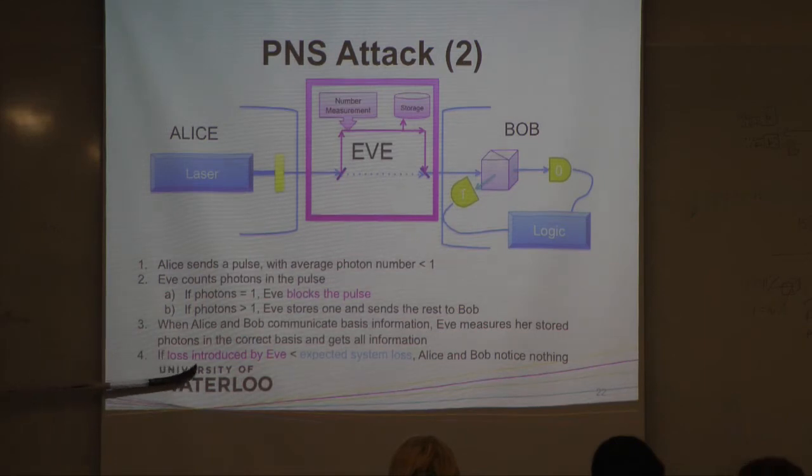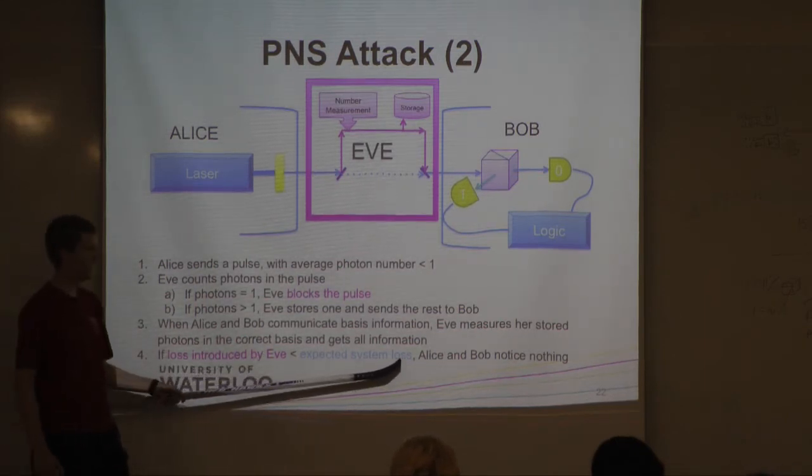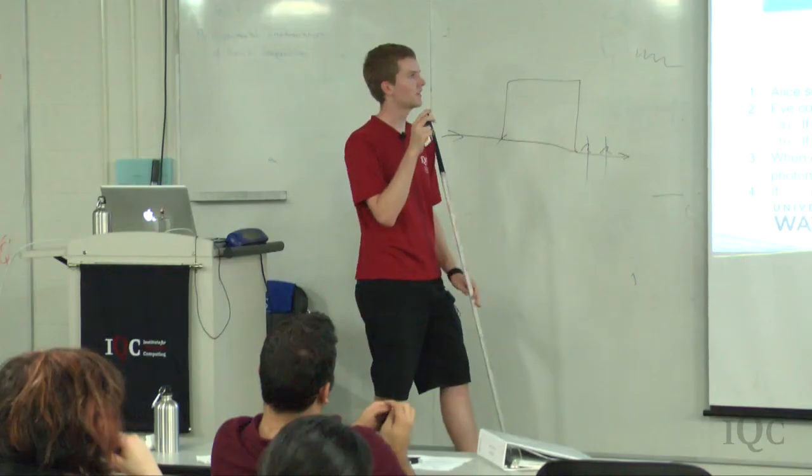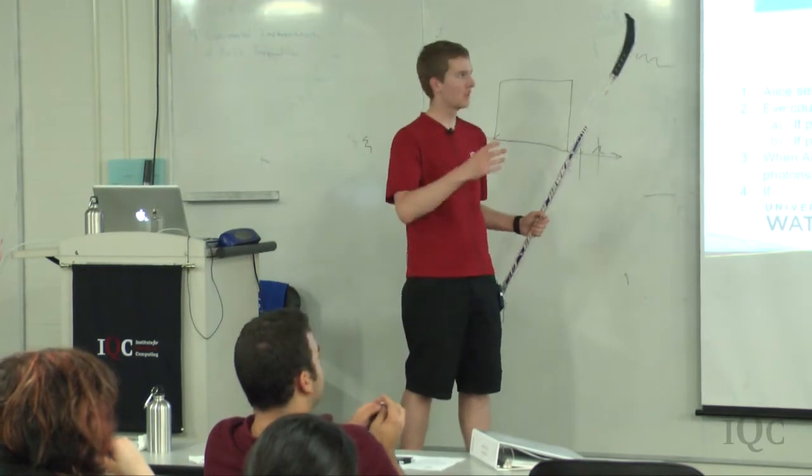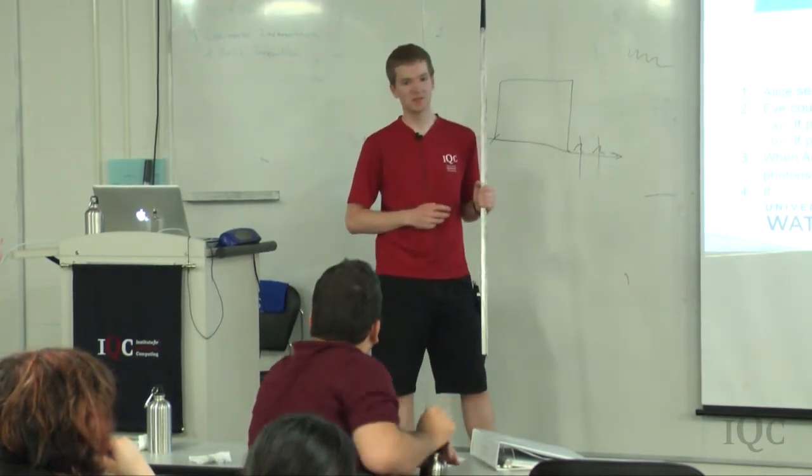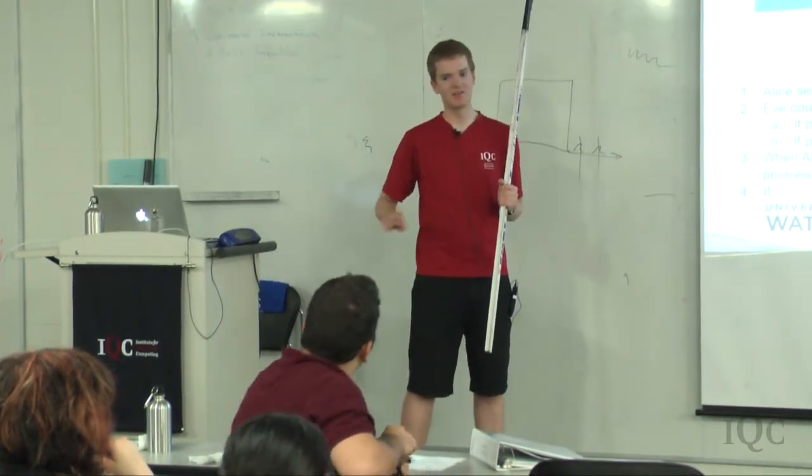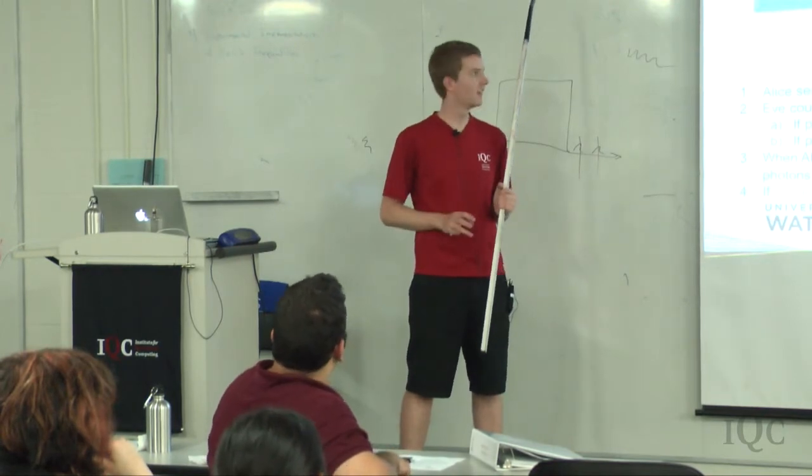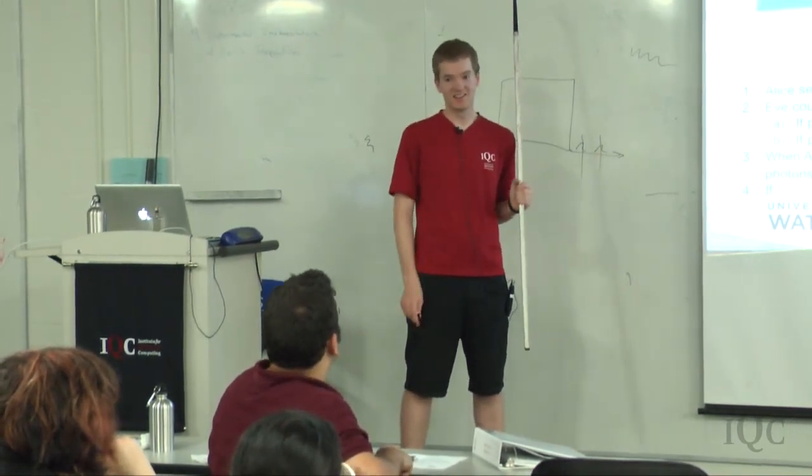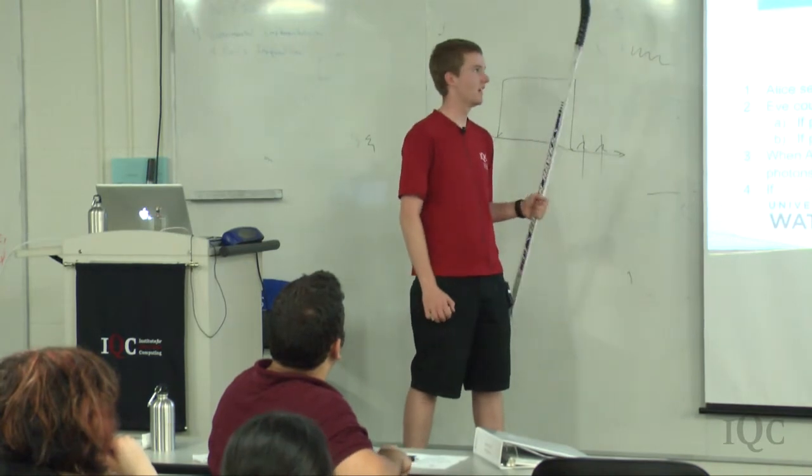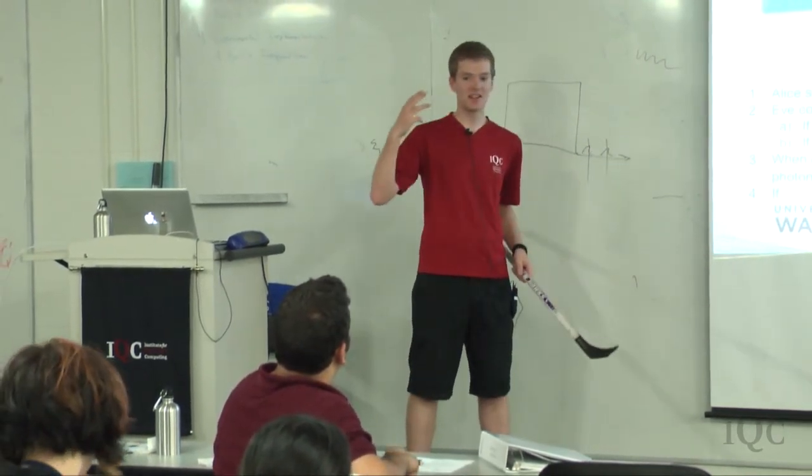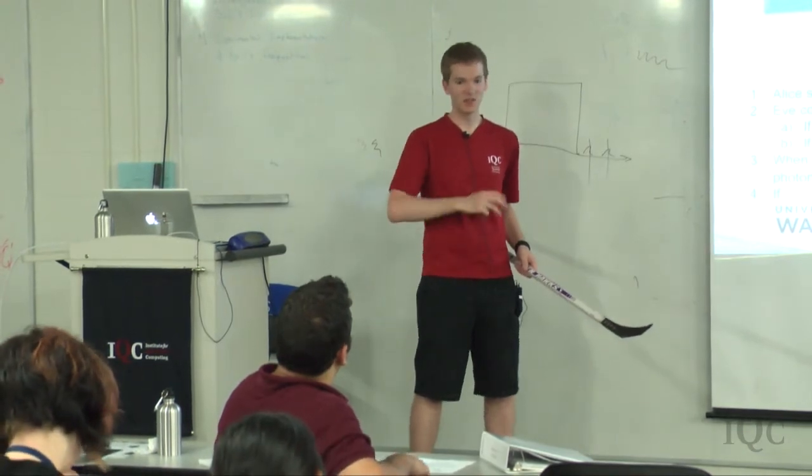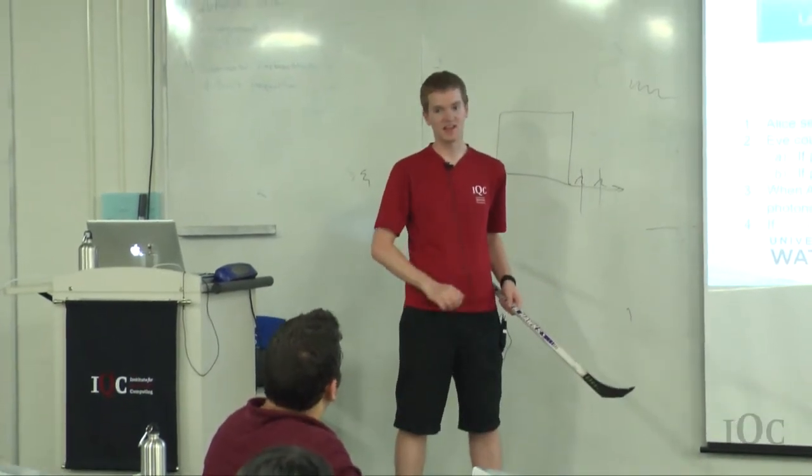So as long as the loss introduced by Eve is less than the loss they expected, Alice and Bob don't notice. The question is, if they're mostly single photons, Eve is just going to block them all. So if you use a really low average photon number, so they're mostly zero, but a couple ones and then very few twos, that would work. But then Bob is mostly getting nothing. So you need to have some trade-off between using a high enough photon number to get lots of keys across, but a low enough photon number so that Eve can't attack all the pulses.